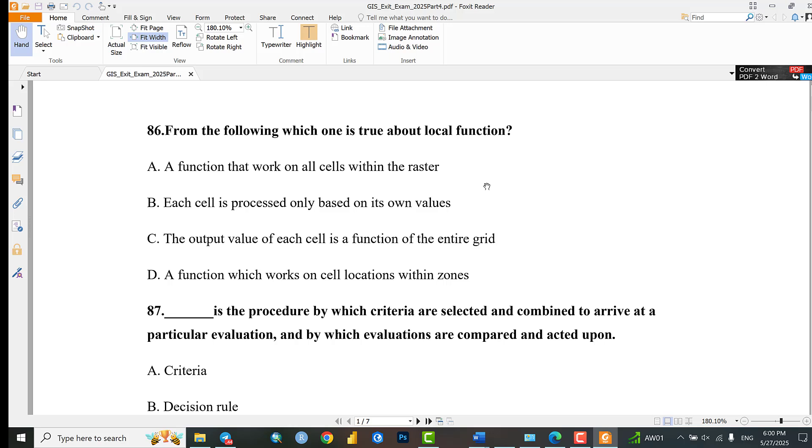C: The output values of each cell is a function of the entire grid. D: A function which works on cell locations within zones. The answer is B: Each cell is processed only based on its own cell values.